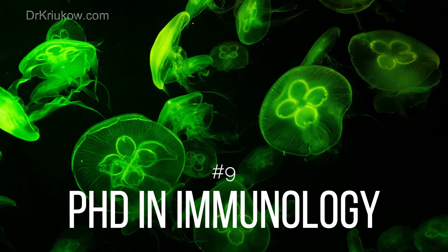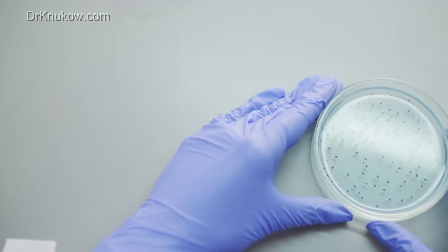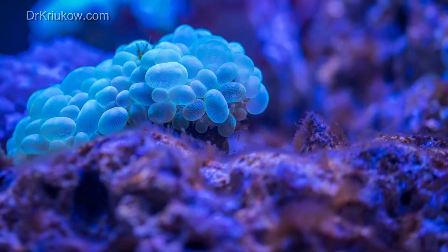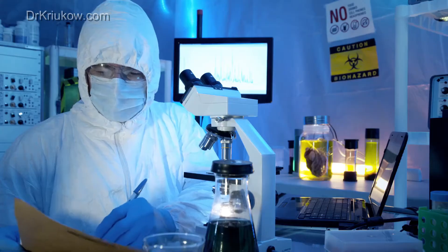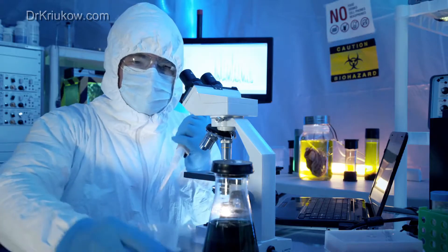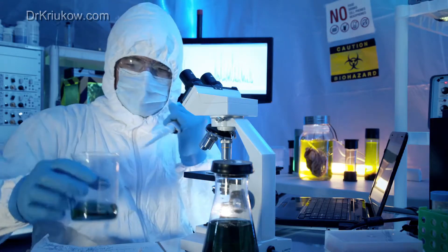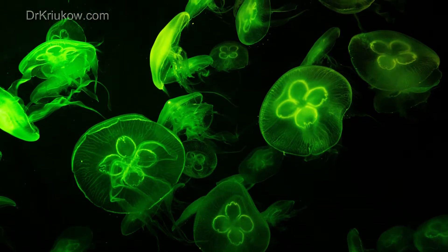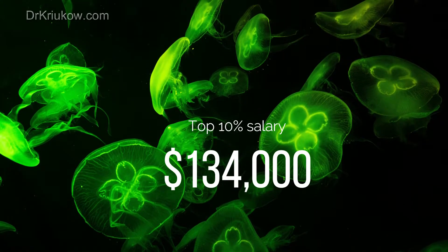Number 9 is a PhD in immunology. Immunologists focus on the area of microbiology that has to do with human immune systems and how it interacts with bacteria and viruses. Primarily they work in research and they often work on developing vaccines which sounds rather relevant to our current situation in the world. The top 10 salary of immunologists in 2020 was around $134,000 a year.